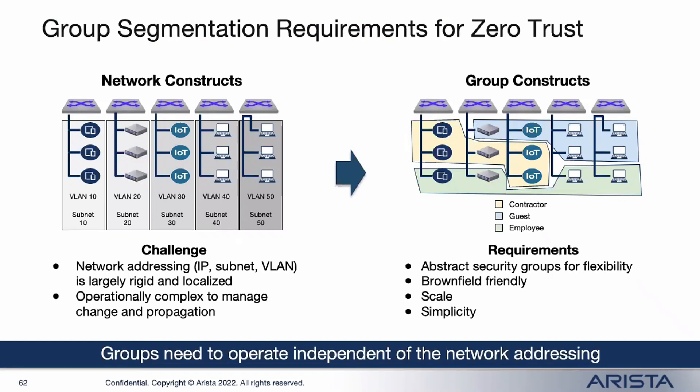Before we dive deep into what MSS Group is, let's give a quick glimpse of the problem it's trying to solve. If you look at the traditional way of doing segmentation — VLANs — it has served us very well, but one thing with this approach is that it's tied to network addressing. The IP addresses, subnets, and VLANs are closely tied together. So if you want more granular segmentation, like breaking a VLAN into two separate VLANs, you might have to re-IP your network.